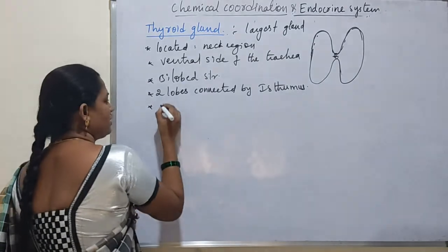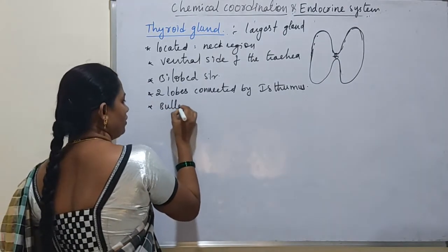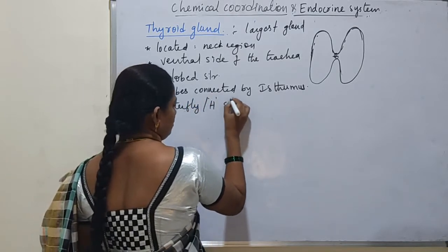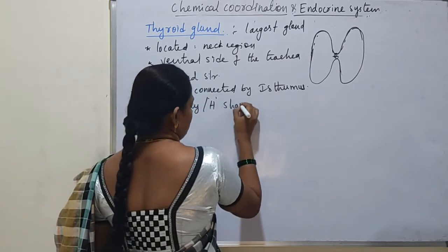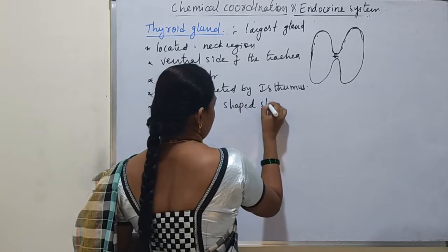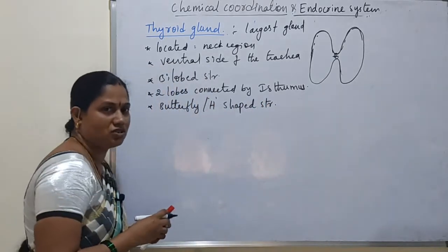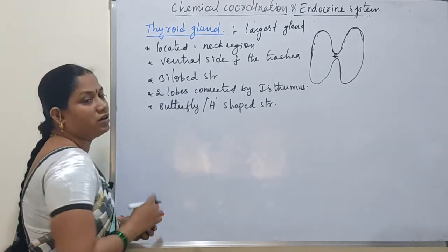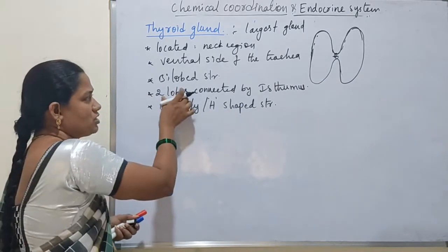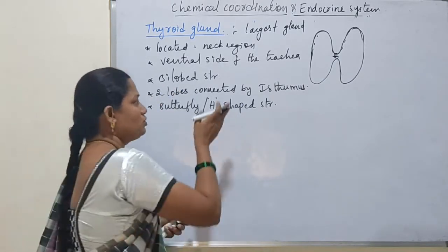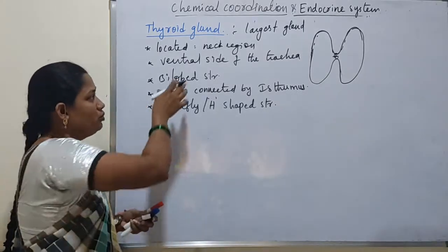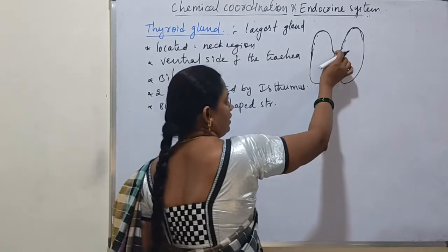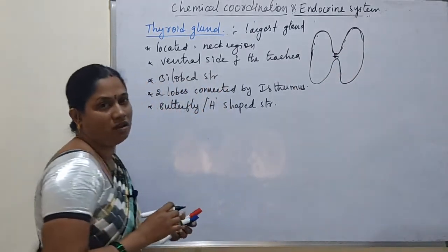The thyroid gland has a butterfly shape, also described as an H-shaped structure. That is why it has two lobes and is called a bilobed structure. The two lobes are connected by the isthmus.